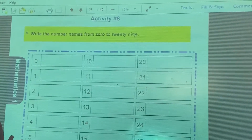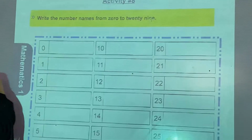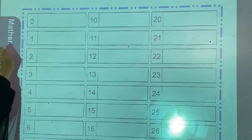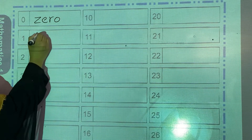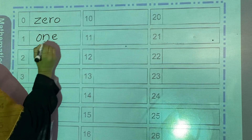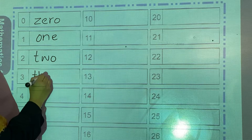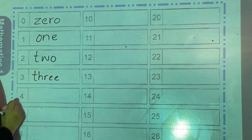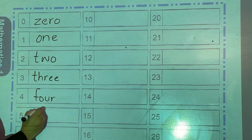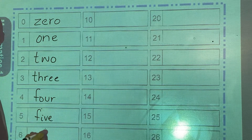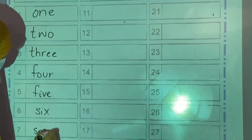Now we are going to start our activity number 8. Write the number names from 0 to 29. You have to write it down in the given boxes like this: 0 — Z-E-R-O, 1 — O-N-E, 2 — T-W-O, 3 — T-H-R-E-E, 4 — F-O-U-R, 5 — F-I-V-E, 6 — S-I-X, 7 — S-E-V-E-N.